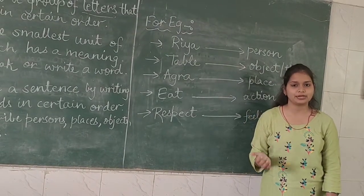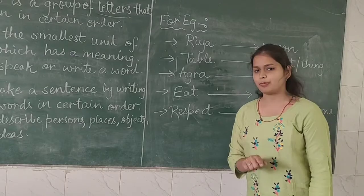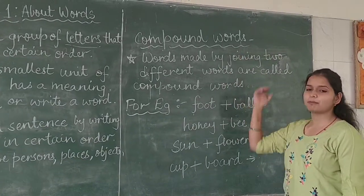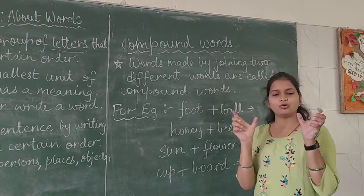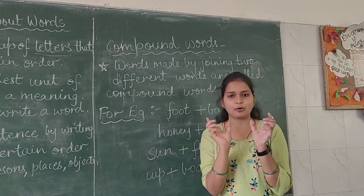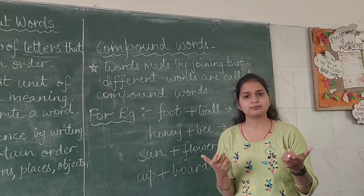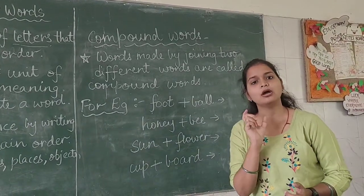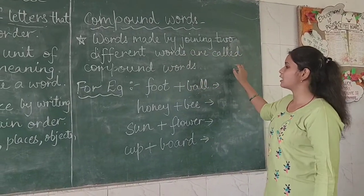I hope you all have understood this topic very clearly. Now coming to the next topic of the same chapter — that is compound words. Words made by joining two different words are called compound words. Koi bhi do words, like 'foot' is one word and 'ball' is another word. When we combine these two words to form a third word, that is 'football'. So that word football is known as a compound word, because in it two words are already joined.